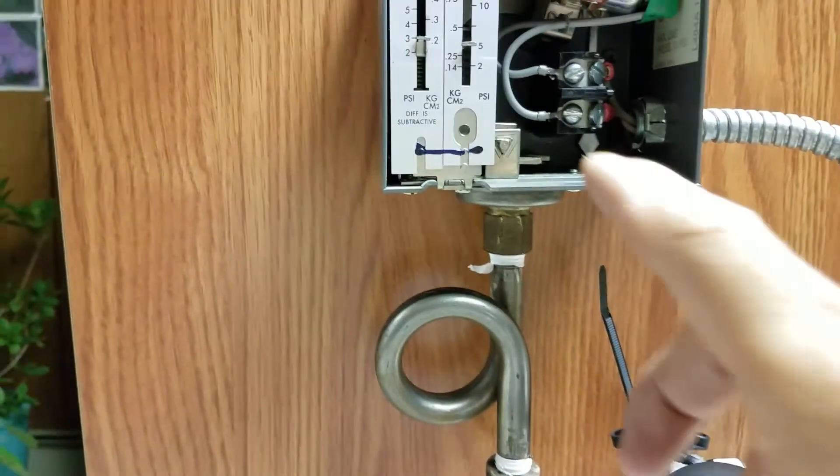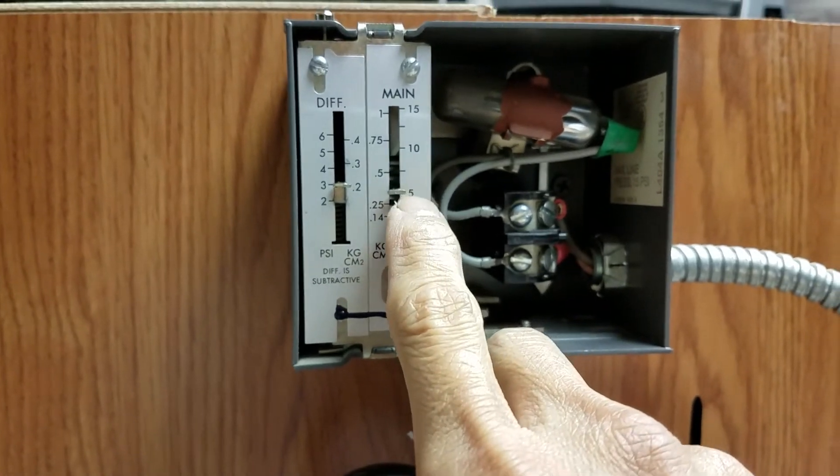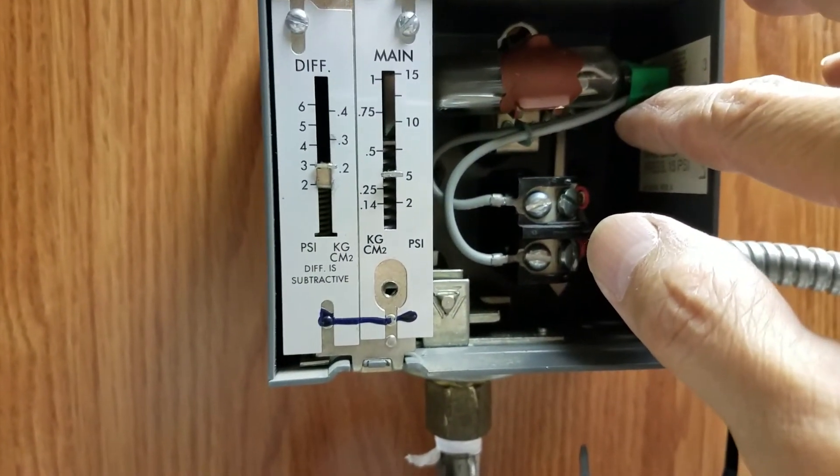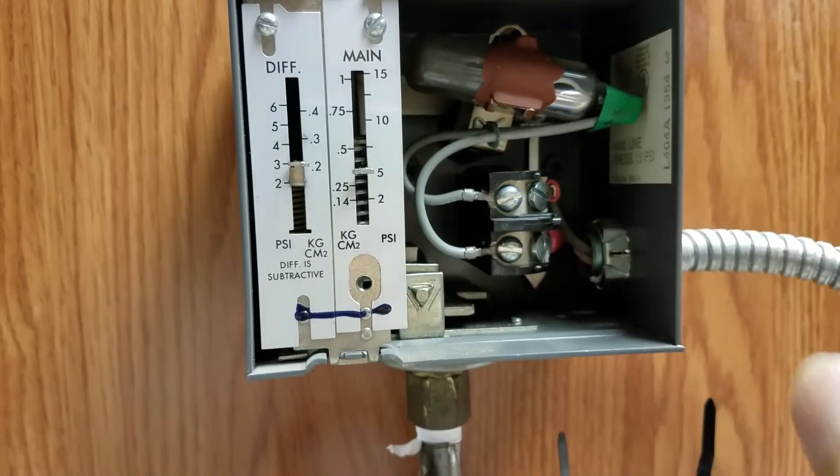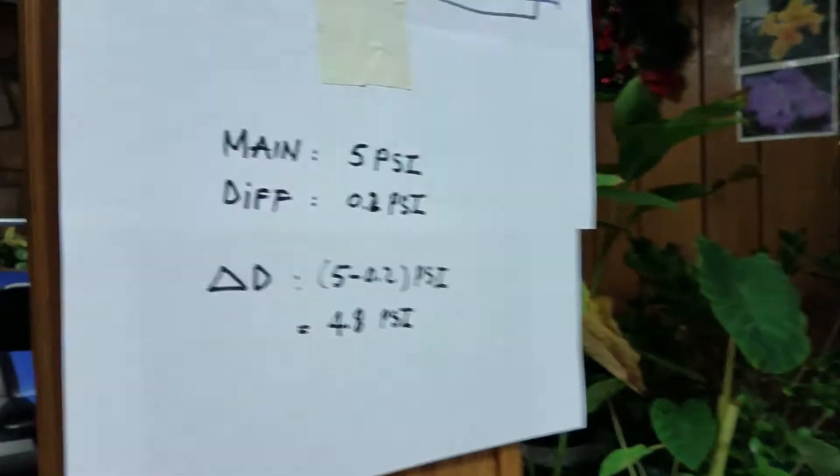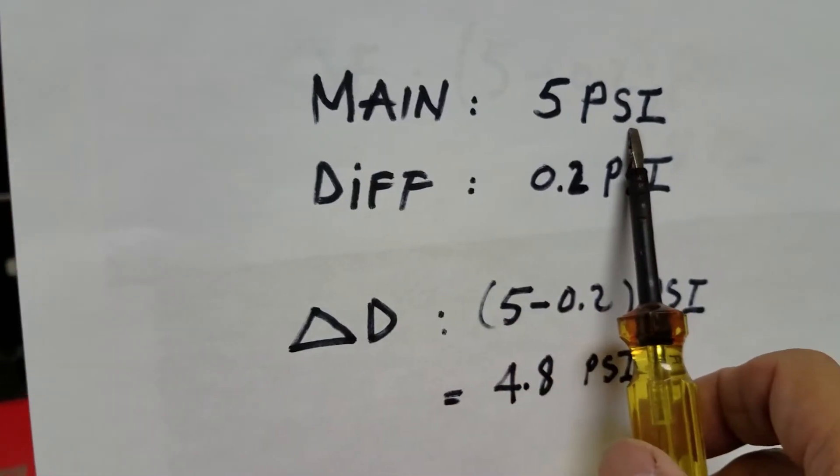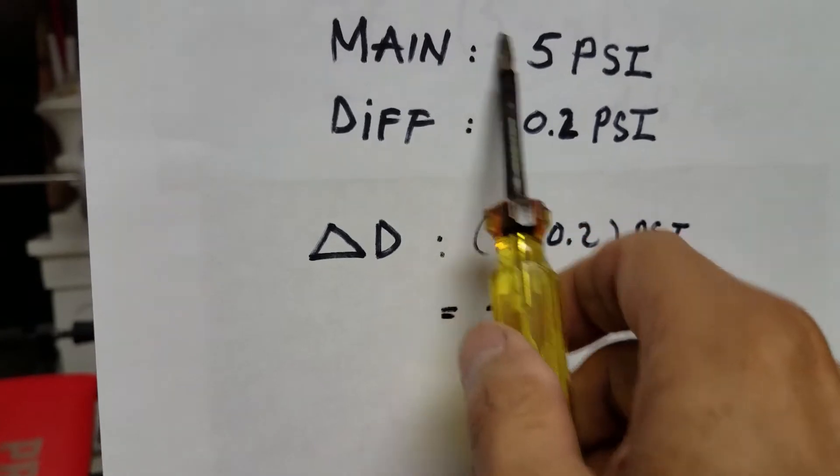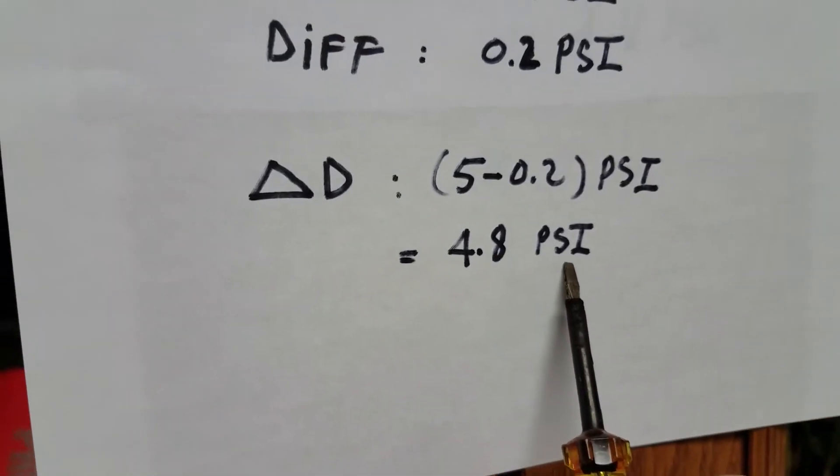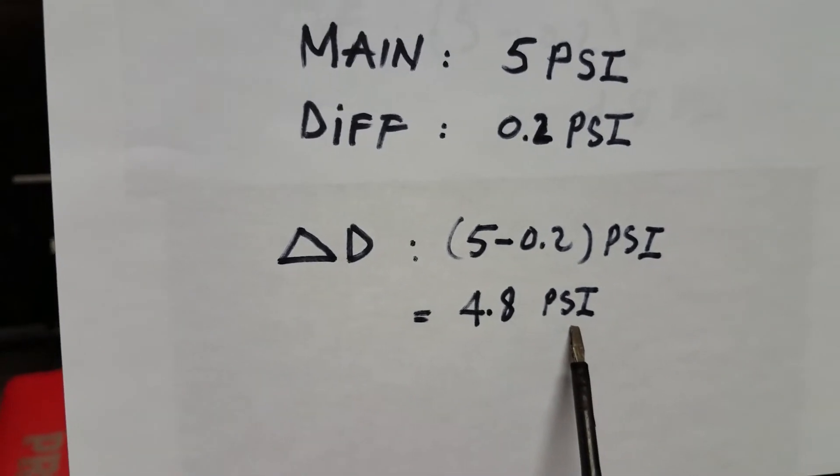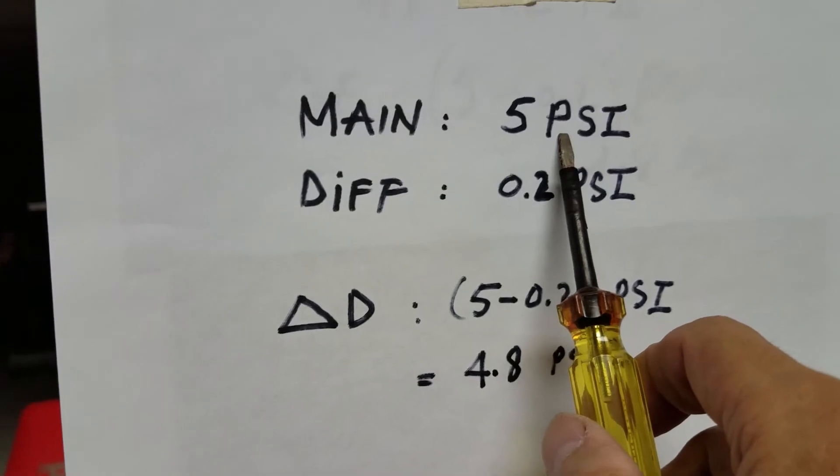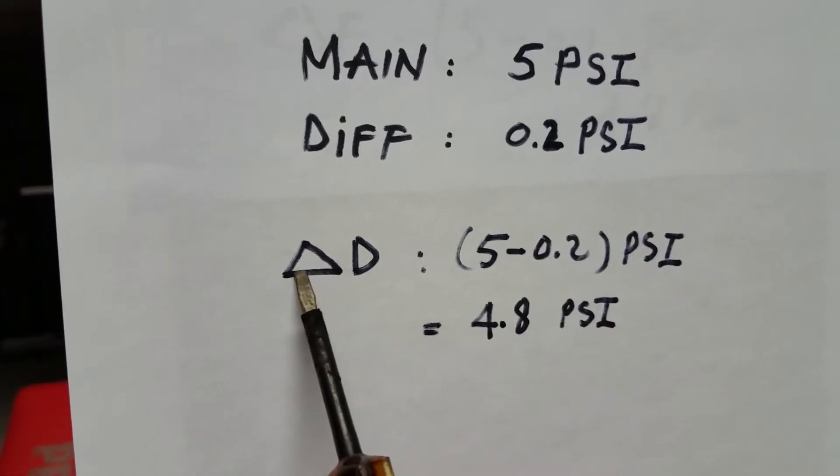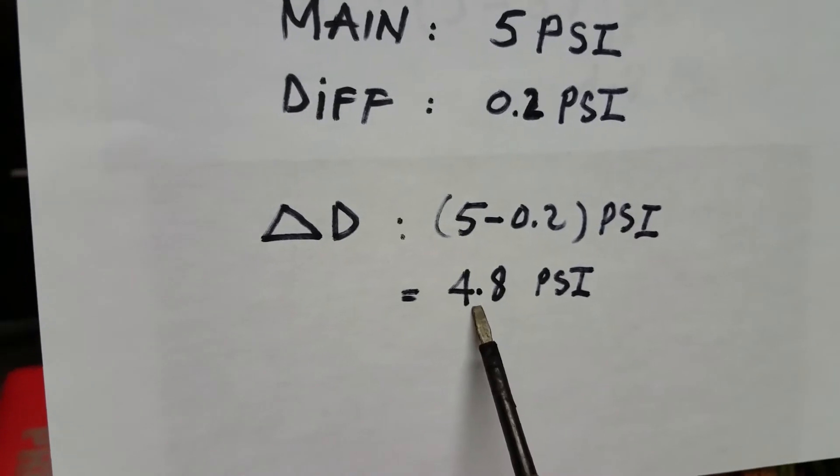When you pump up to 5 psi, contact will open. And when the pressure starts to drop to 4.8 psi, contact will close again. Optical reset. Right now I'm going to show you on the paper. The main 5 psi. Differential 0.2 psi. If the movement between 5 to reduce to 4.8 psi, the contact will reset. At 5 psi, contact will open. And because you adjust the differential at 0.2 psi, the differential pressure for both, become 4.8 psi contact will reset.